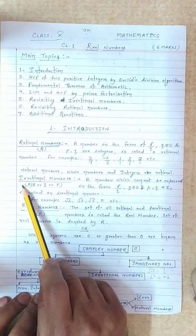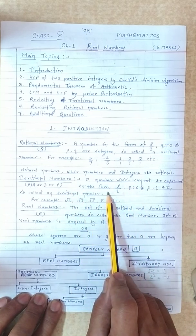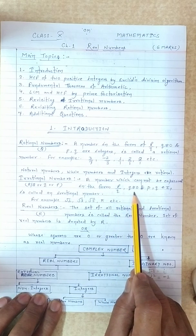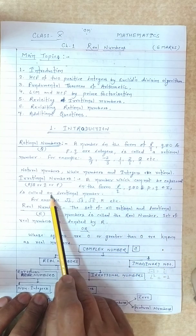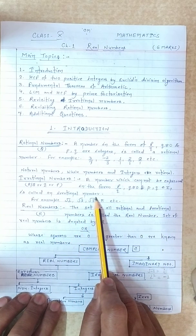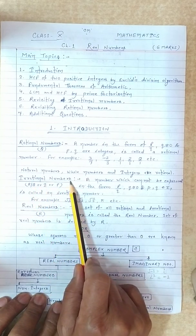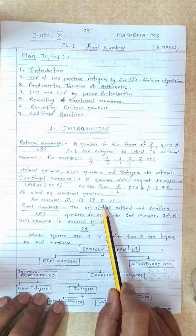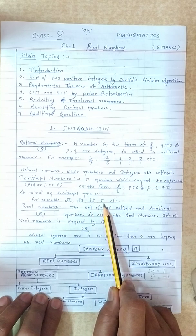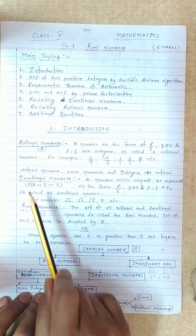Irrational numbers: a number which cannot be expressed in the form p upon q, where q is not equal to 0 and p, q belong to integers (Z), is called an irrational number. For example: root 2, root 3, root 5, pi. Pi is an irrational number.